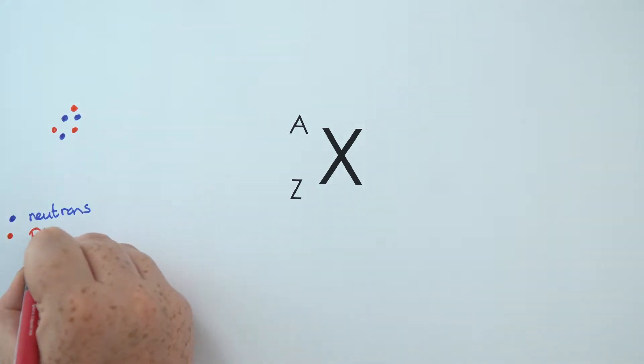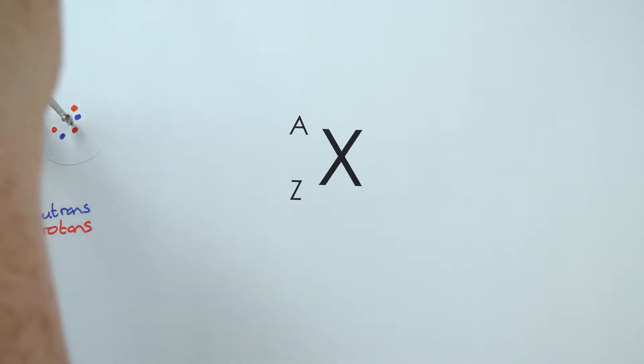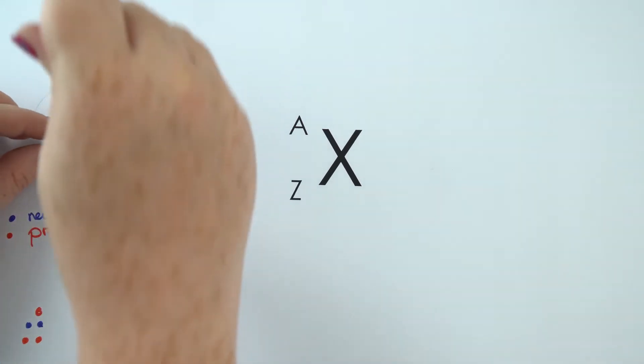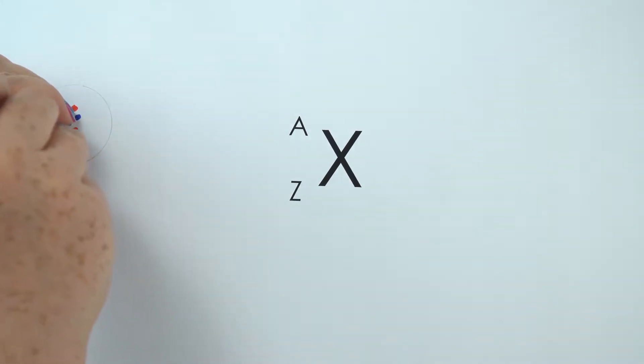So what we've got here is a model of the atom where we've just got some dots to show the neutrons and protons inside the nucleus of that atom, and these are surrounded by different orbitals or different shells where we have our electrons.